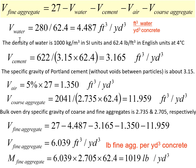In the previous steps we calculated the volume of water, volume of cement, volume of air, and volume of coarse aggregate. Using the equation, we calculate the volume of fine aggregates as 6.039 cubic foot per cubic yard of concrete. Since we actually measure the amount of fine aggregates by mass or weight, we calculate the mass as volume times density, where density equals specific gravity times density of water. This gives us 1019 pounds per cubic yard of concrete — that's the mass for fine aggregate.